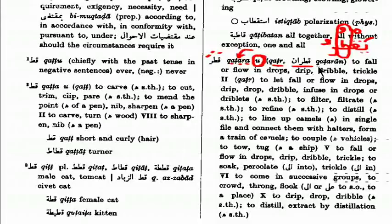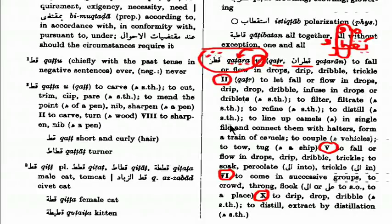That's the base form. Then we have here Roman numeral II, number V, number VI, number X — these are different forms of the verb formed by adding certain radicals or doubling a radical, and we get new meanings from this base form. We'll learn all these inshallah, and they each have their own meanings related to the base meaning.